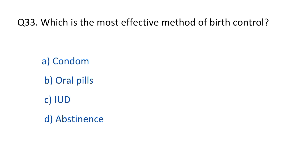Question No. 33. Which is the most effective method of birth control? The right option is D, abstinence.